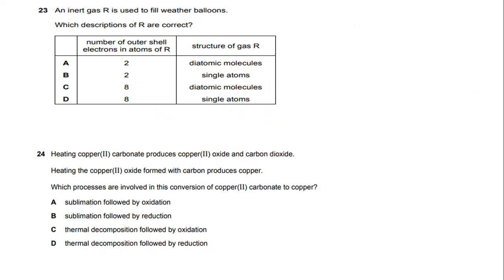Number 23. An inert gas R is used to fill weather balloons. Which descriptions of R are correct? Hydrogen gas consists of only 2 hydrogen atoms. The structure of gas R should be single atoms.